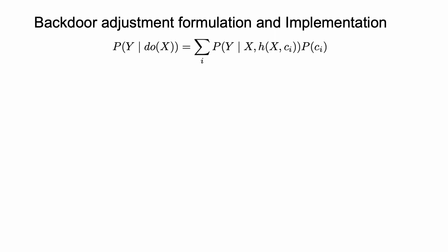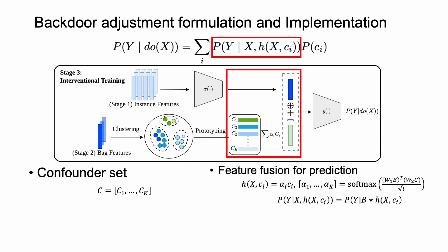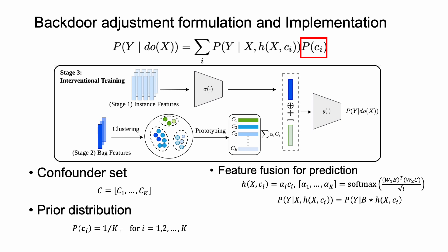And we achieve the interventional training via the backdoor adjustment formulation. And this is our implementation. I will introduce it step-by-step. First, we conduct the clustering on the bag features and use the prototypes to approximate the confounder set. Second, we need to fuse the features of confounders and the bag, which is achieved by the cross-attention. Third, we define a prior distribution for the confounders. We use the uniform distribution by default. And last, we need to absorb the expectation to avoid the expensive cost, and we apply normalized weighted geometric mean for approximation.